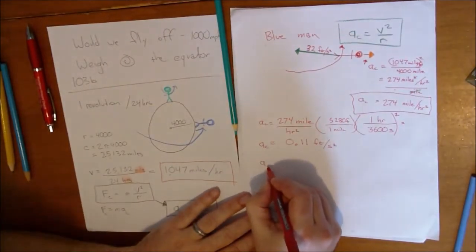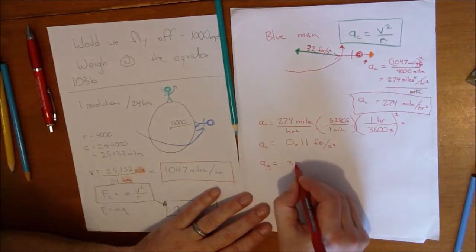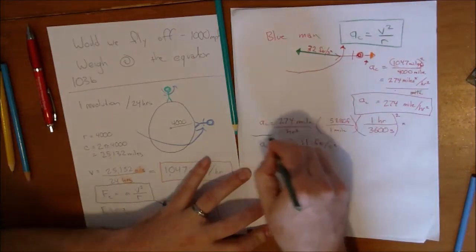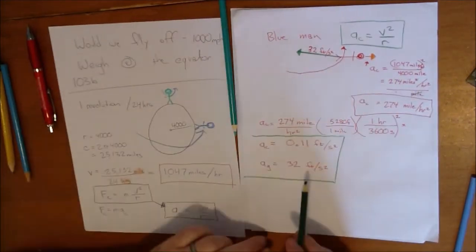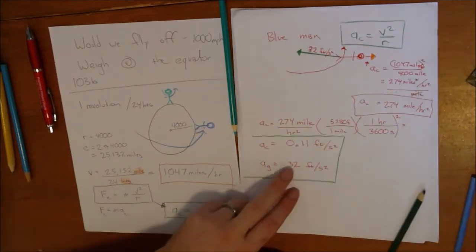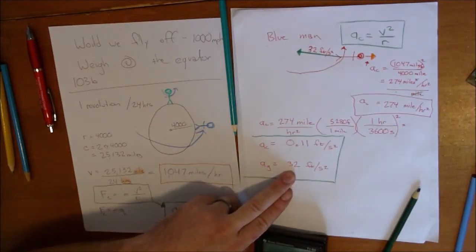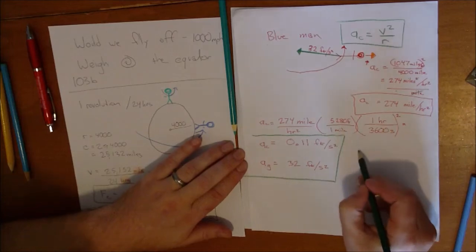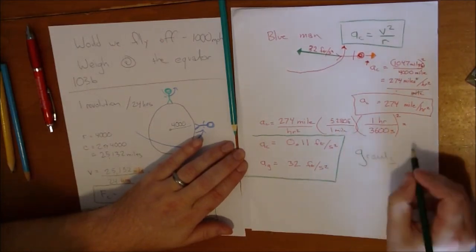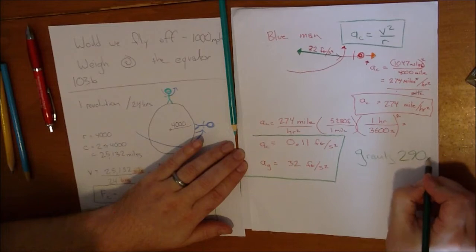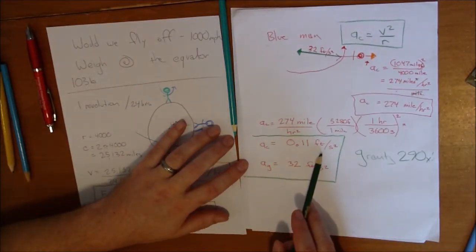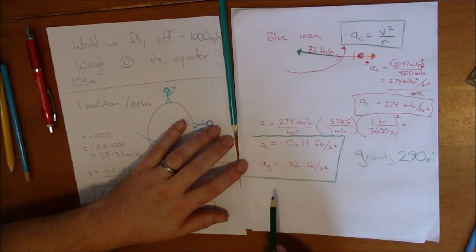The acceleration due to gravity is 32 feet per second squared. So if the force of gravity is, let's divide that out, 32 divided by 0.11, 290. In this, the acceleration due to gravity is 290 times more powerful than the centripetal acceleration. So how is this going to affect us?